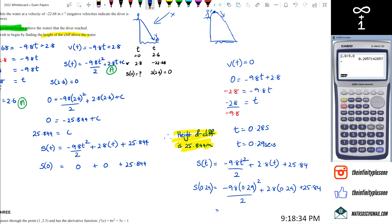So -9.8 × ans² ÷ 2 + 2.8 × ans + 25.84. That actually gives us 26.24 as the maximum height the diver actually reached.